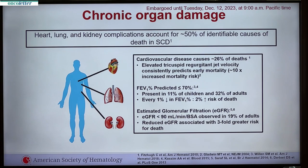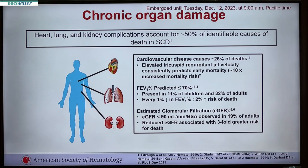Those with FEV1 percent predicted of less than 70 percent by pulmonary function testing: for every 1 percent decrease in FEV1 percent, there is a 2 percent increased risk of death. Estimated glomerular filtration rate assessing kidney function is less than 90 cc in 19 percent of adults, and reduced glomerular filtration rate in sickle cell disease is associated with a threefold greater risk of death.